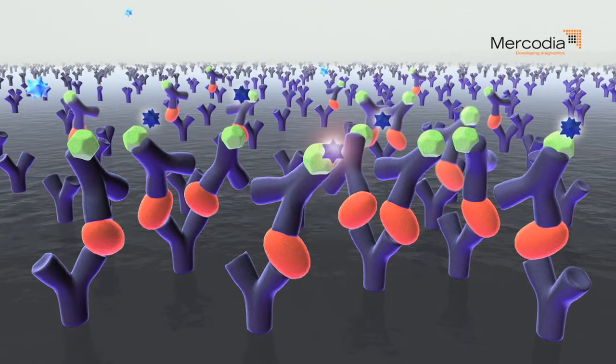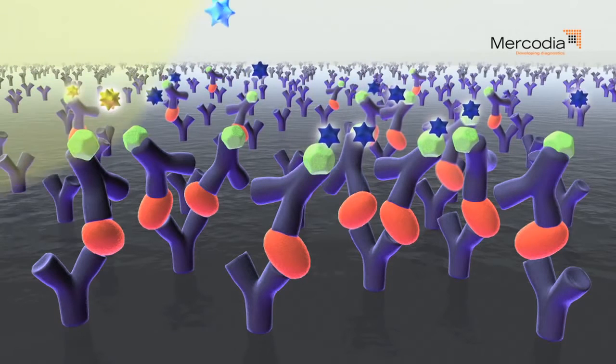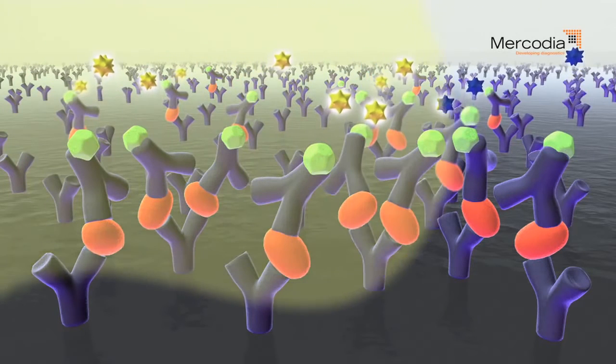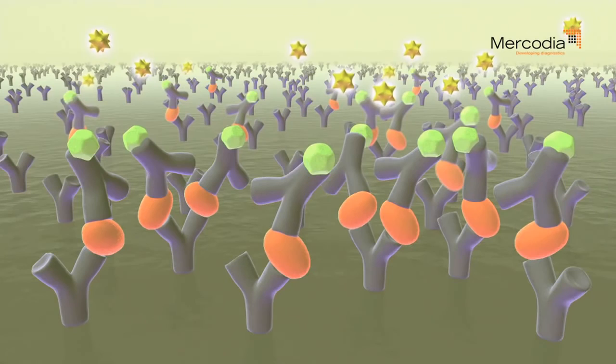Substrate is added, which is converted by the enzyme to a chromogenic signal. The enzyme reaction is stopped and the result is monitored spectrophotometrically.